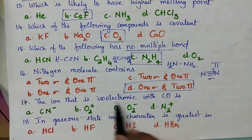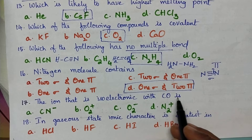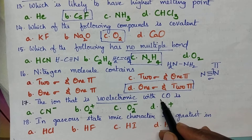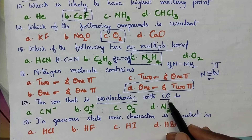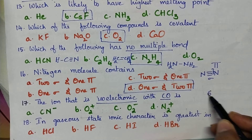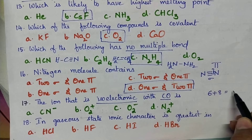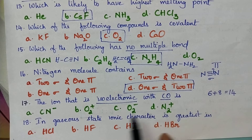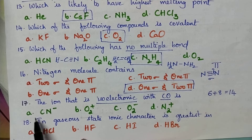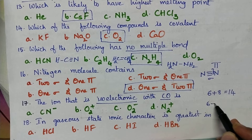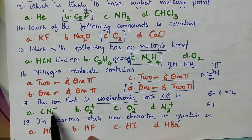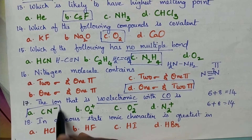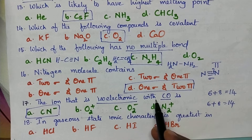The ion that is isoelectronic with carbon monoxide: isoelectronic means containing the same number of electrons as carbon monoxide. Carbon has 6 electrons and oxygen has 8 electrons, so carbon monoxide has 14 electrons in total. Among the options, we identify which ion contains 14 electrons. The cyanide ion (CN⁻): carbon has 6 electrons, nitrogen has 7 electrons, and the negative charge adds 1 more, giving 14 electrons. So option A is the right answer — the cyanide ion is isoelectronic with carbon monoxide.